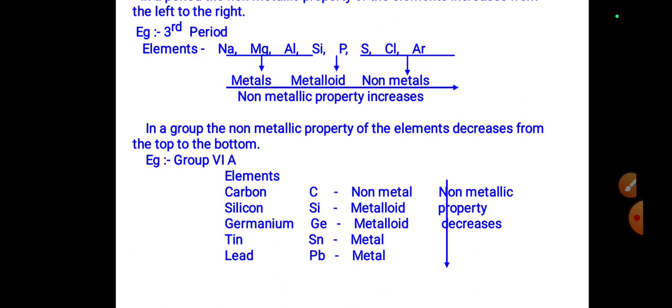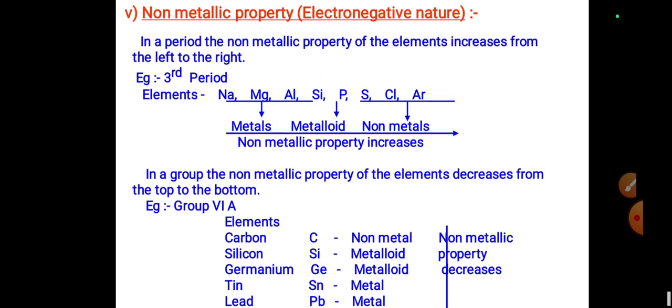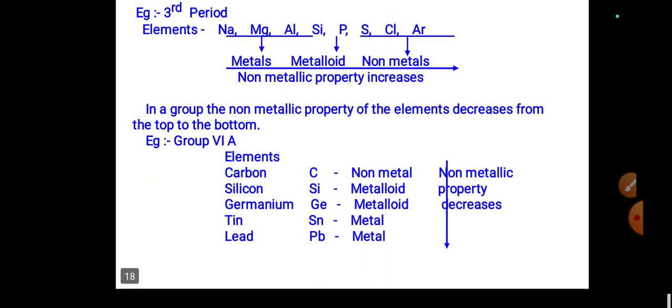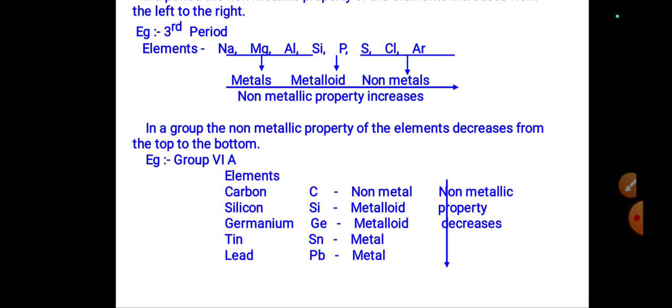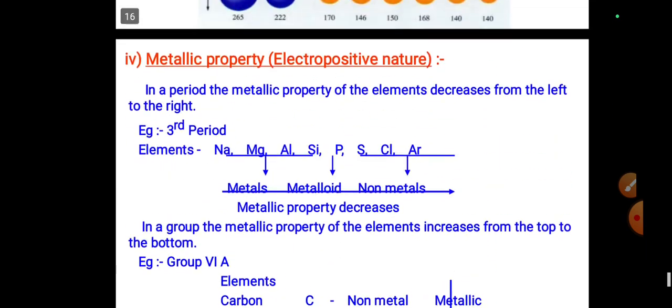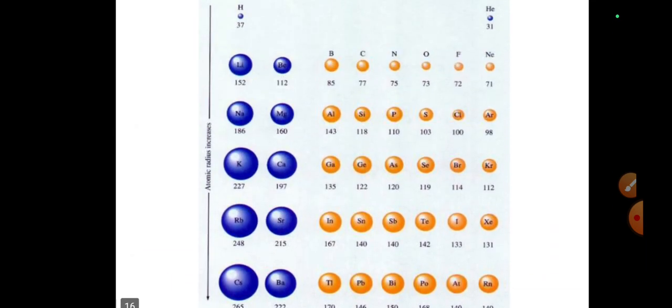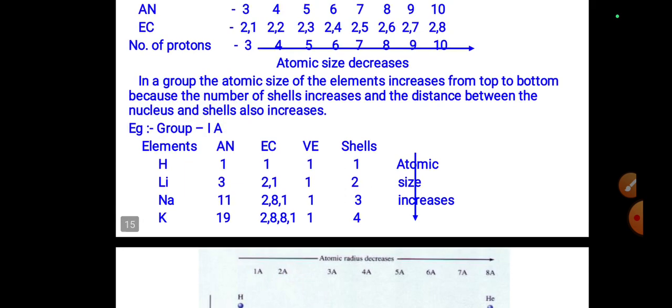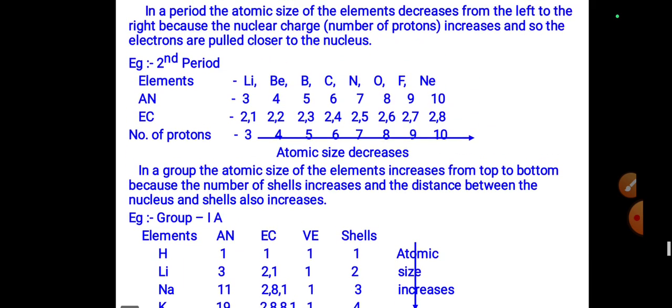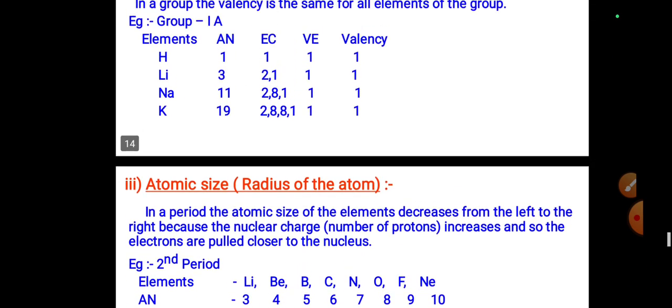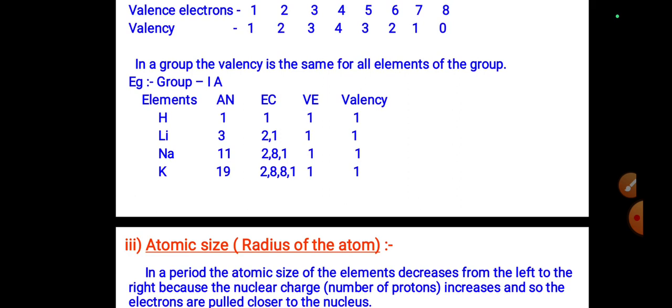In a period going from left to right, non-metallic property increases. In a group going from top to bottom, non-metallic property decreases. This chapter is practical in nature, so audio notes alone may not be sufficient — taking detailed written notes and preparing well is recommended. Thank you very much.